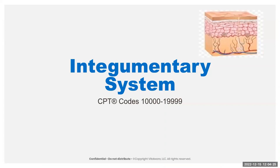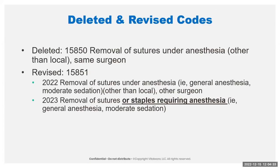In the surgery section, that's your 10000 through 69999. In the integumentary system, we do have some changes, and most of these are going to be somewhat related to some changes regarding the hernia codes. The interesting thing about the new hernia codes that have been published is there are no global days associated with them. When they've done the revisions to the suture removals, this is to help code for the suture removal for hernia repairs where the patient's coming in. They've deleted the 15850 and have revised the 15851.